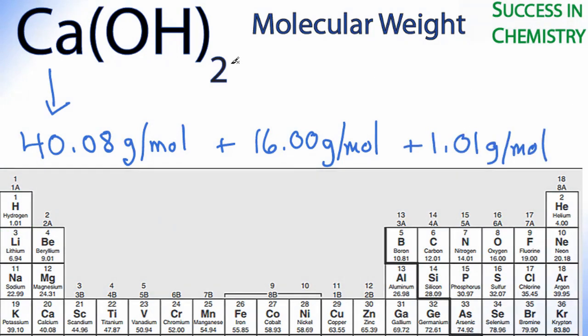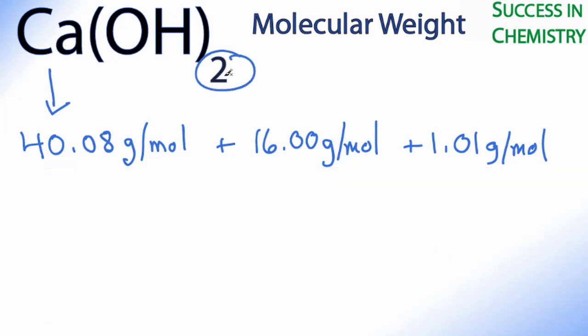Now at this point, we need to take into account this 2 here. This 2 applies to the oxygen and the hydrogen. So you can just put parentheses around this term here and a 2 outside in order to find out your molecular mass or molecular weight for Ca(OH)₂.